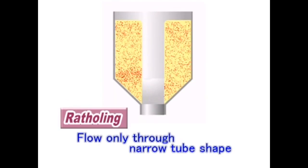This type is called rat-holing because the hole resembles one that a wild mouse would make. This occurs when inserted materials only flow through a narrow tube-like opening within the tank.